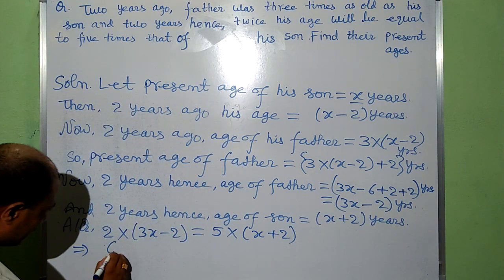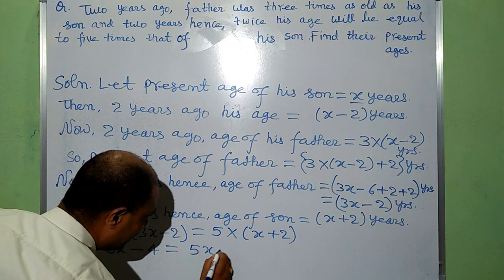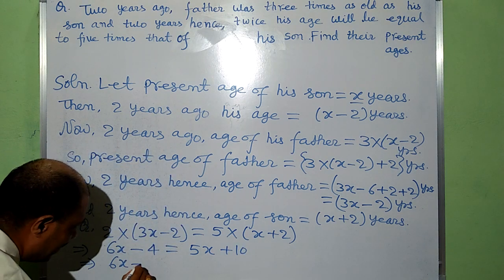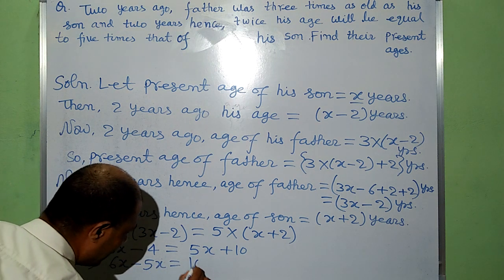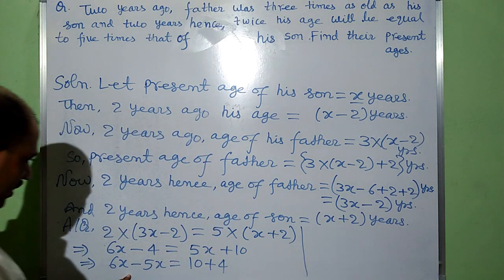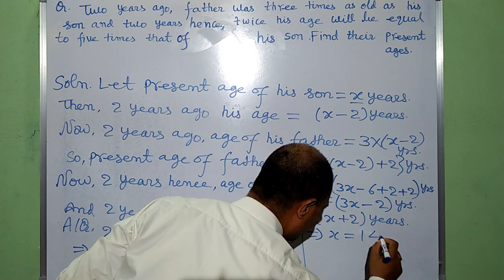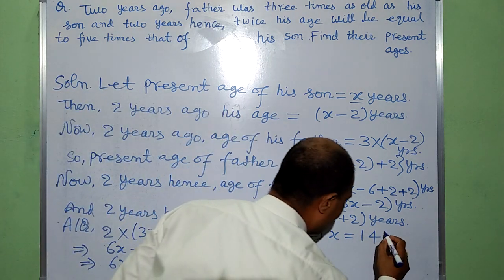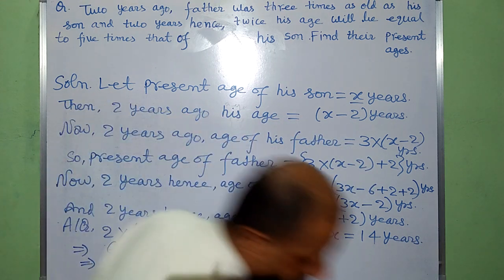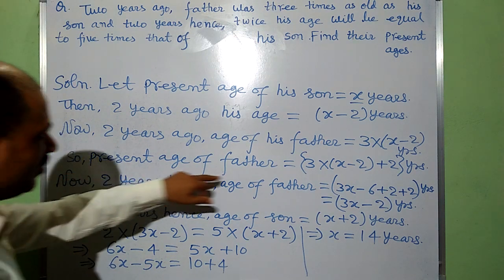Now we have to solve this. This implies that 6X minus 4 equals 5X plus 10, which implies 6X minus 5X equals 10 plus 4, that is X equals 14 years. In this way, present age of his son is 14 years.